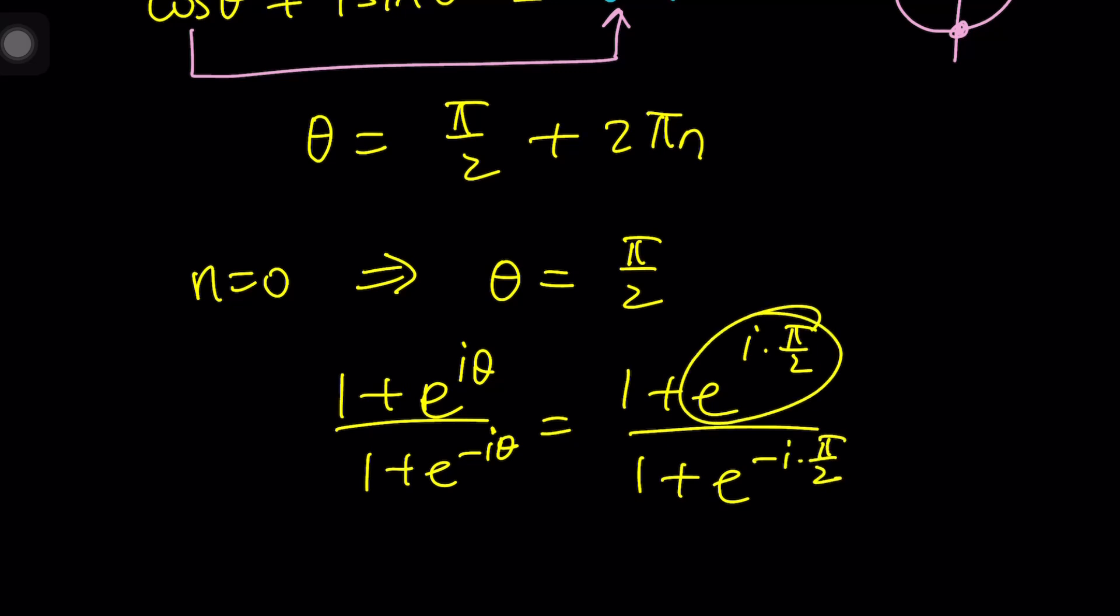Now, you should know that this is equivalent to what? Cosine pi over 2 plus i sine pi over 2, which would be i. So this is 1 plus i. And guess what? This is going to be 1 minus i because those are conjugates, right? Yes.